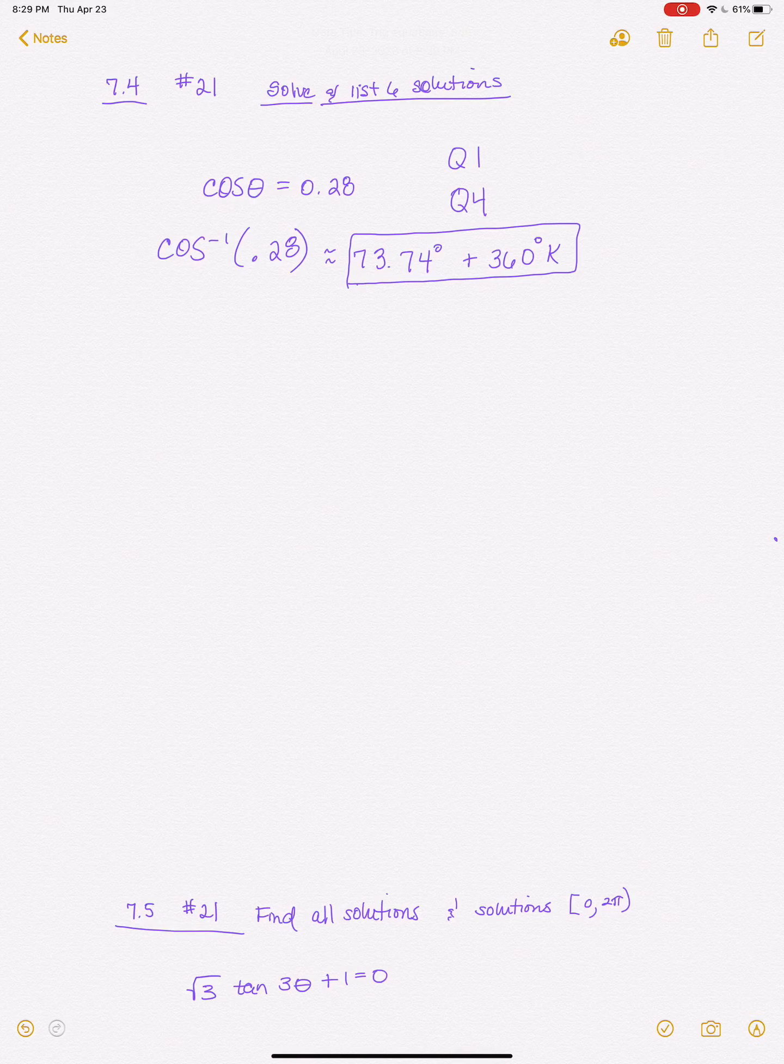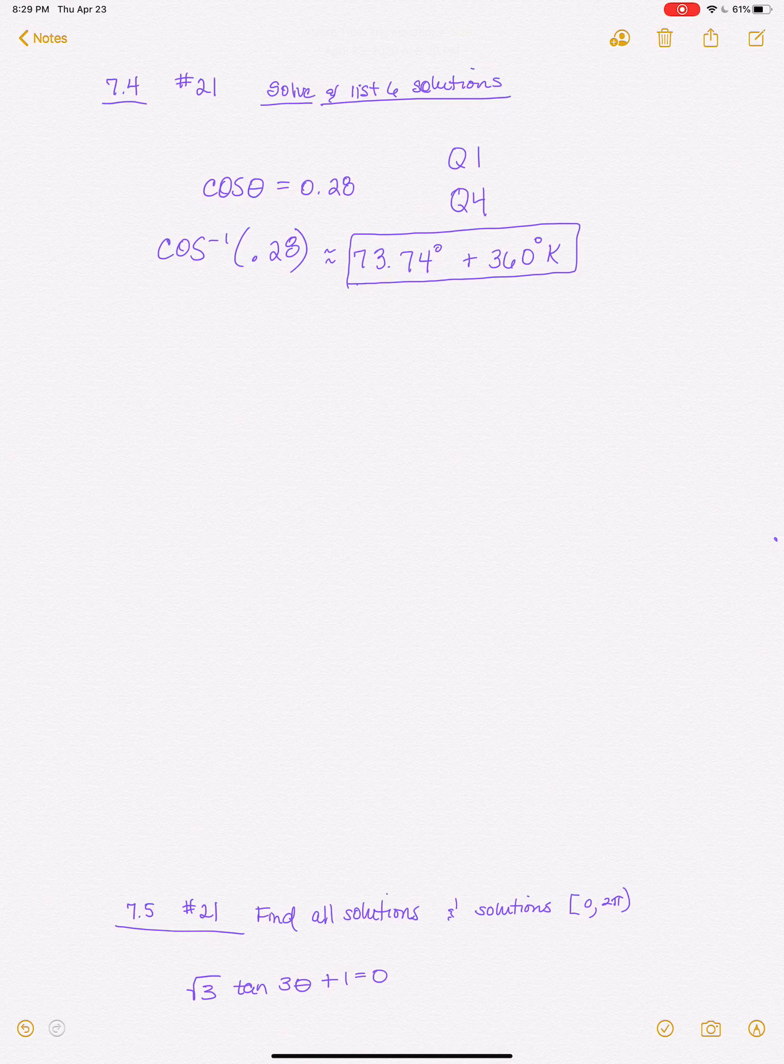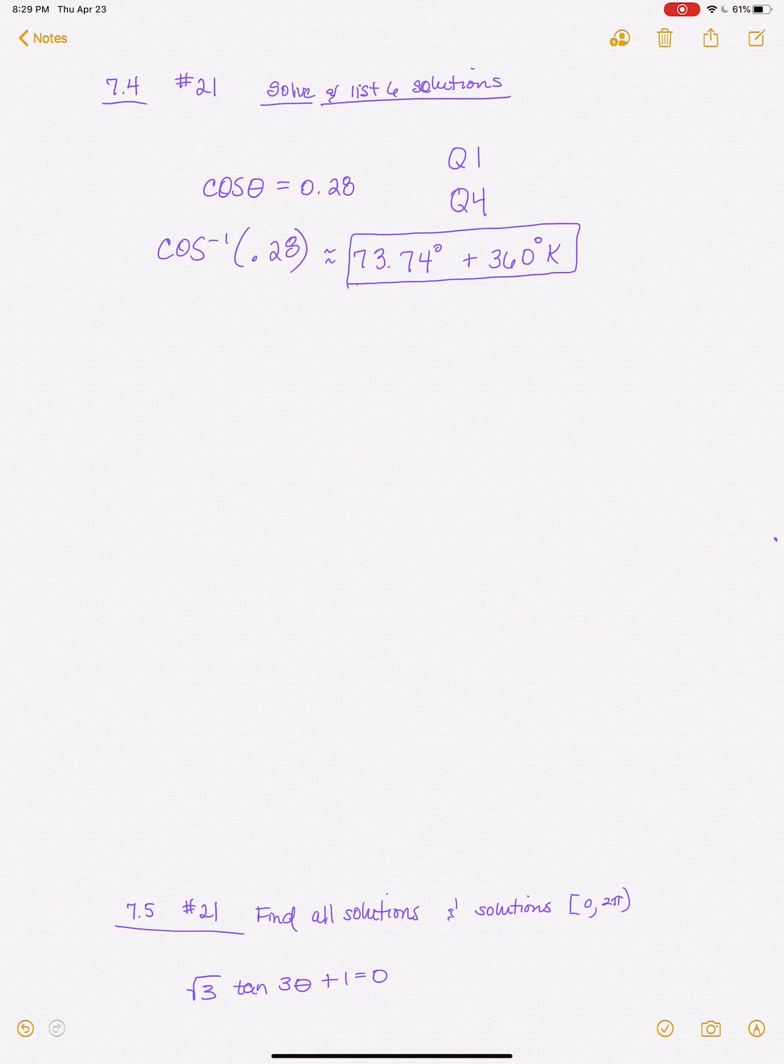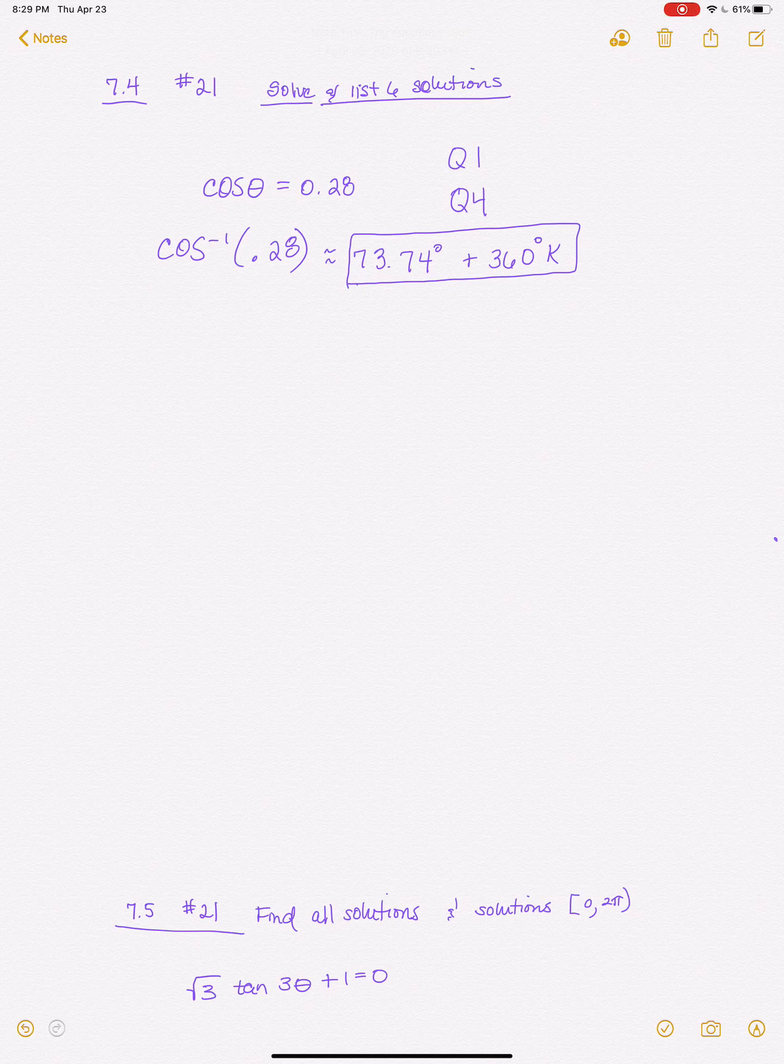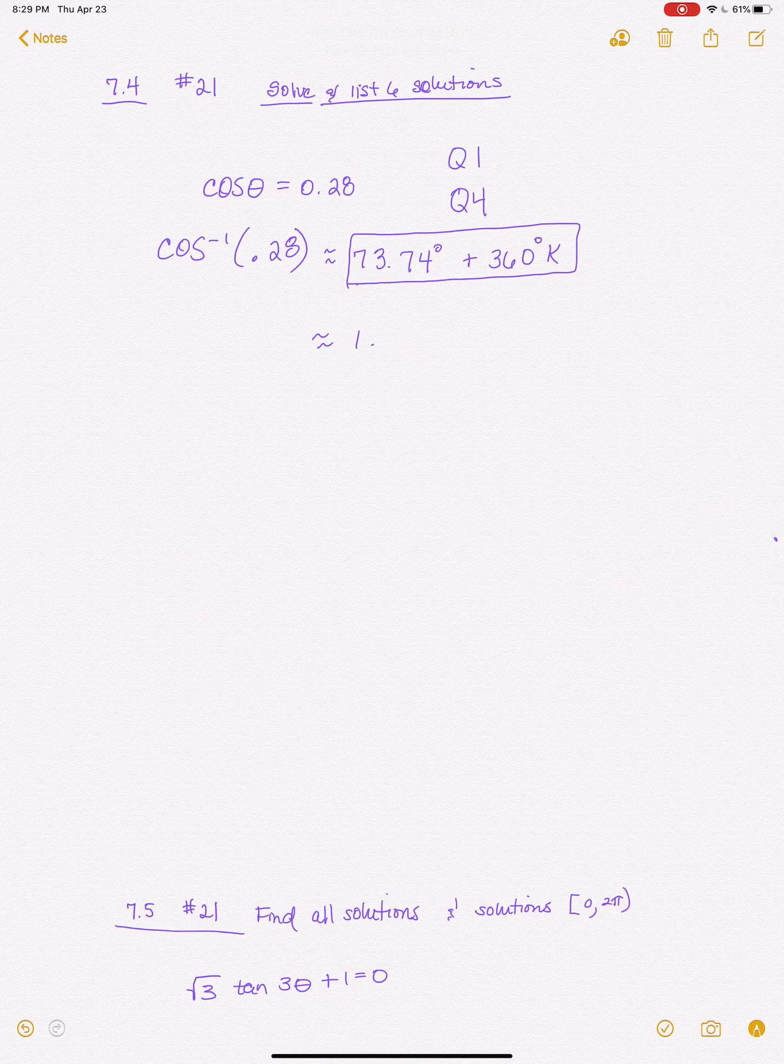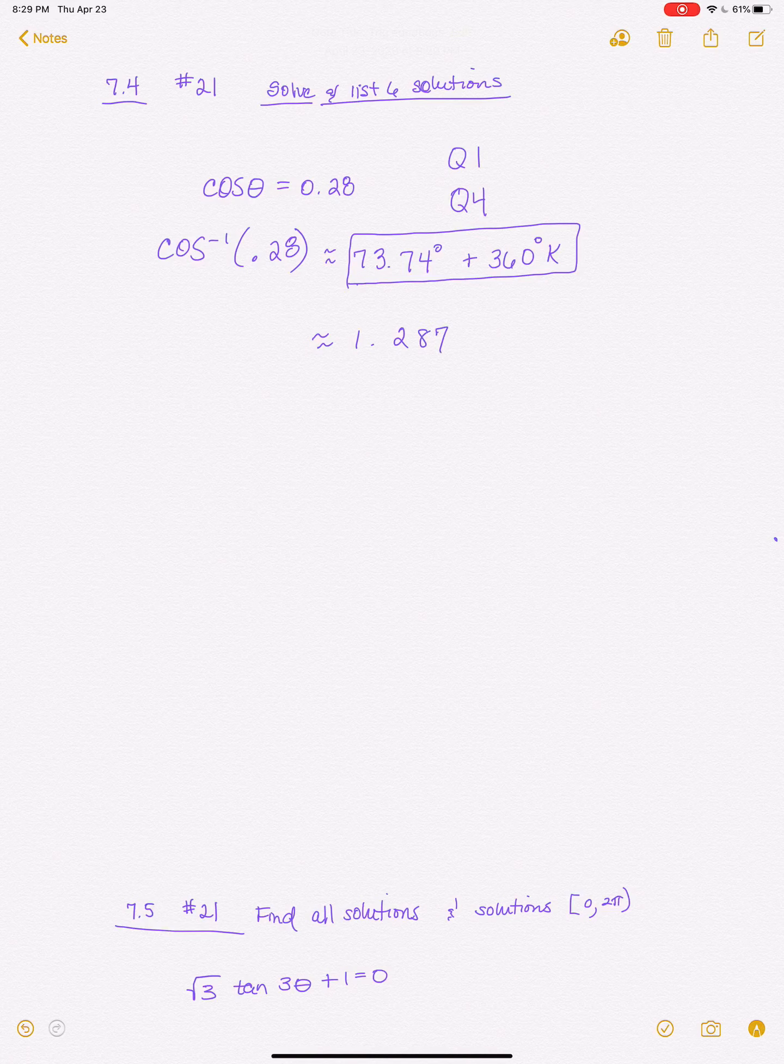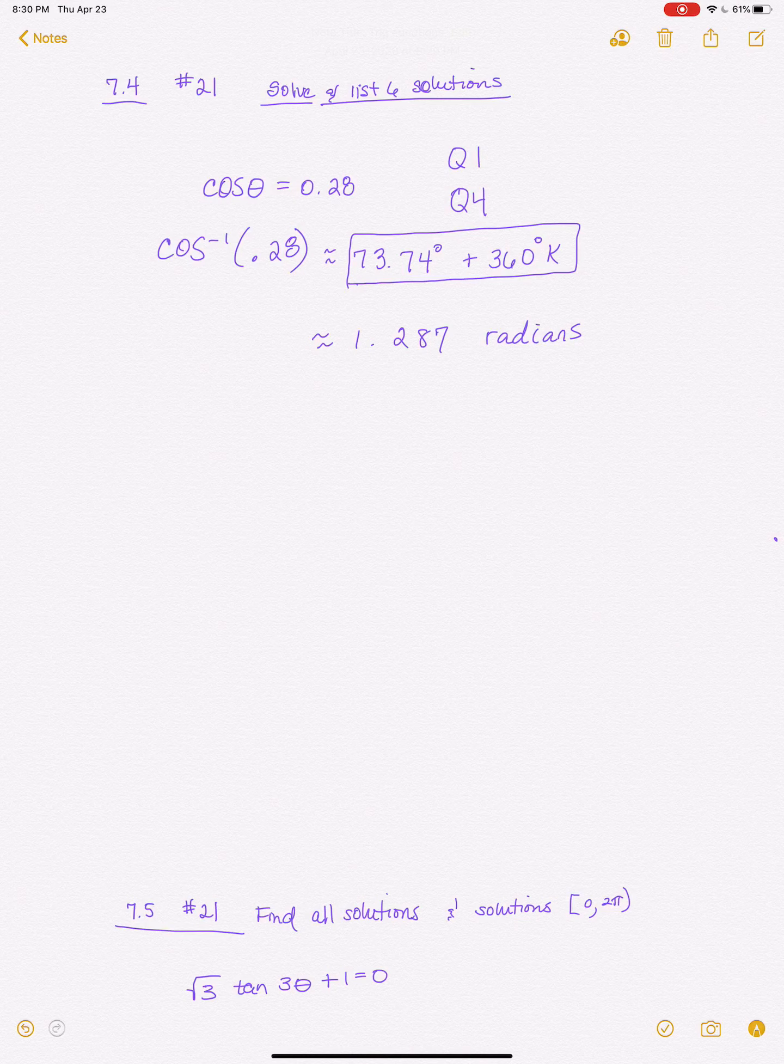So you could solve out everything and then convert like we learned. That was one of the first things we learned, but I would make it easier on myself. I would just go ahead and put my calculator in radian mode. And so when you plug in 0.28 and you're in radian mode, you get that. It's approximately one point and I'm going to go ahead and do three decimal places. So 1.287 radians. Alright. So that's out of my first quadrant. So that would actually be my reference angle in radians.